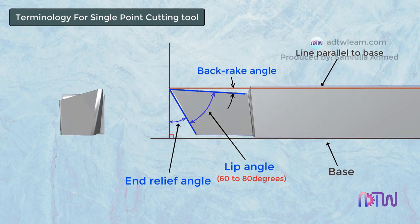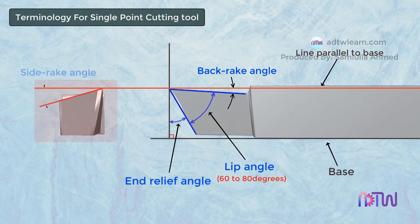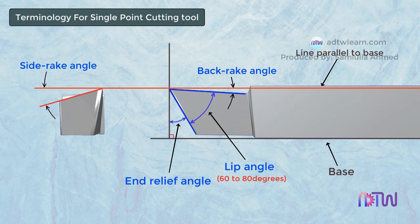The angle made by the face of the tool with the line parallel to the base of the tool, measured in a plane that is perpendicular to the base of the tool and the side cutting edge, is called the side rake angle. The rake angle allows the chips to flow plastically over the tool face. The rake angle of the tool is very important because it is the only angle on which the strength of the tool depends.